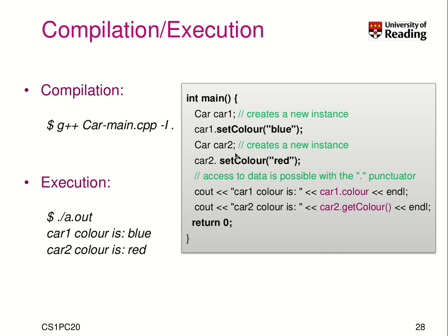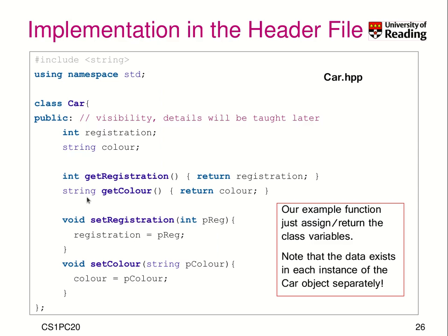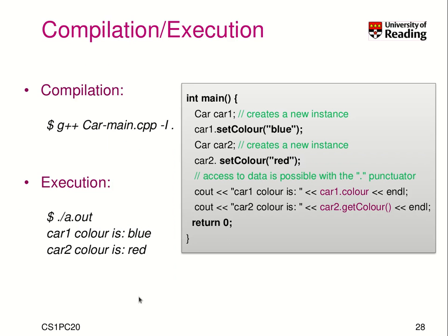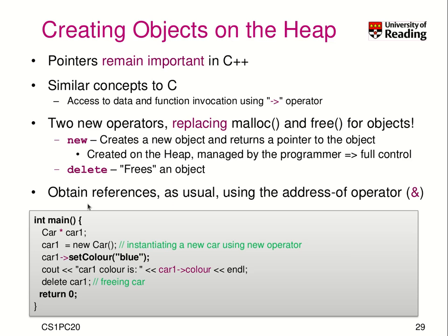When we call a method on an instance, the scope is that of that specific instance. So whenever a function accesses a variable that is part of a class instance, it is specific and different for each instance. That's why it's called a method, compared to the idea of a function. In C++ you can still have normal functions, but they are not bound to an object.